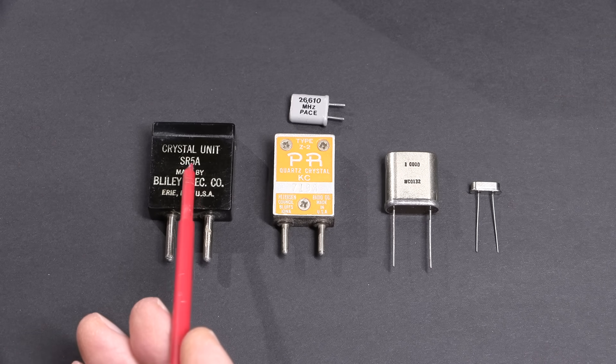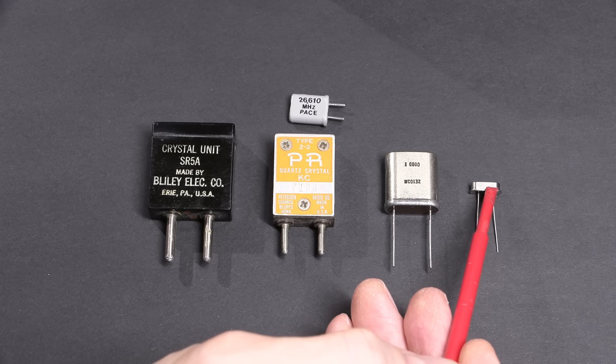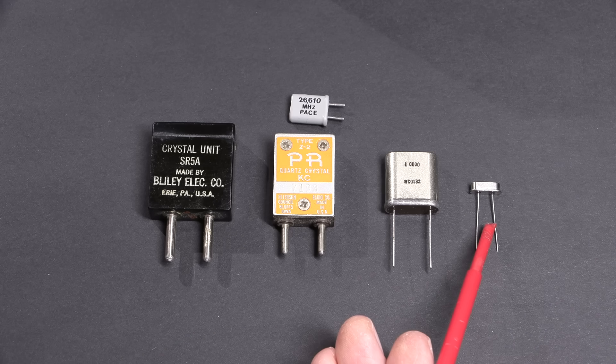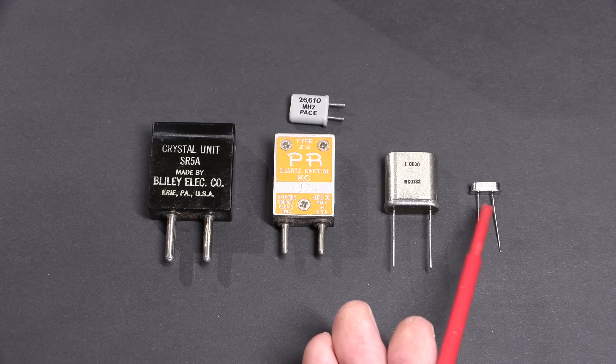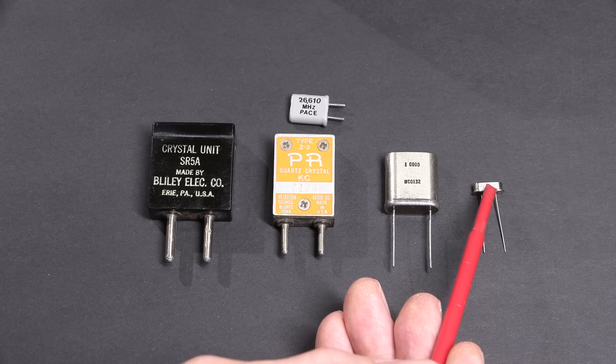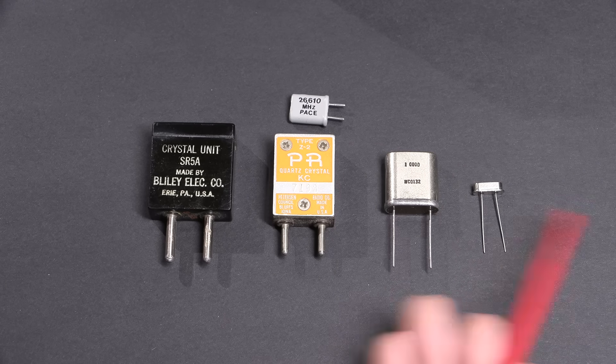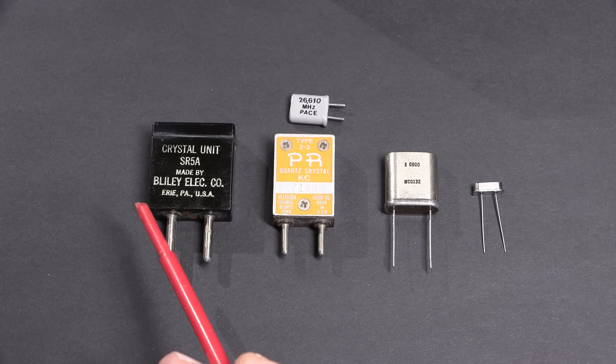Crystals come in all sorts of different shapes and sizes as you can see here, and they get much smaller than this. For example, a crystal inside of your cell phone or a very small device like a watch - they get much much smaller. These here are easy to hold and to test, and I'll show you this in just a moment. We'll test these crystals and I'll give you an example of how these things work.